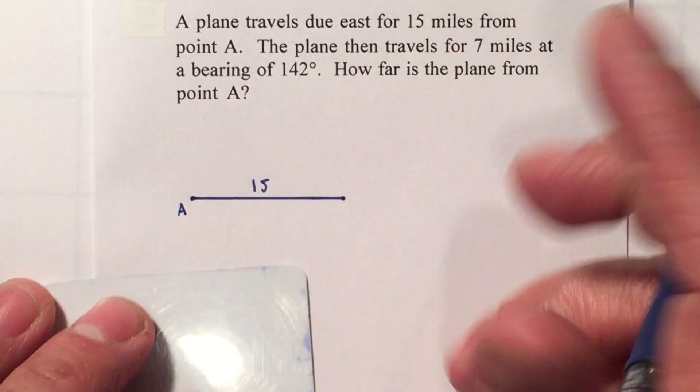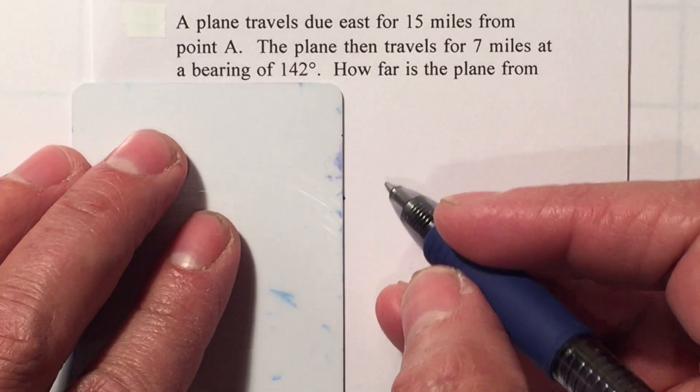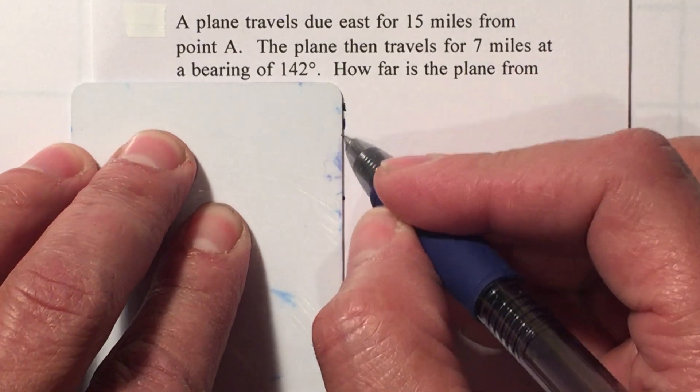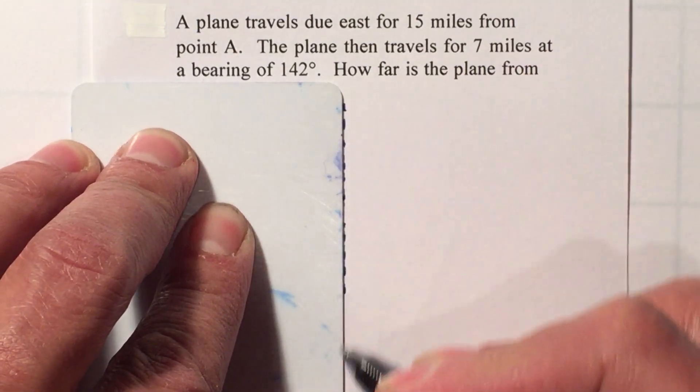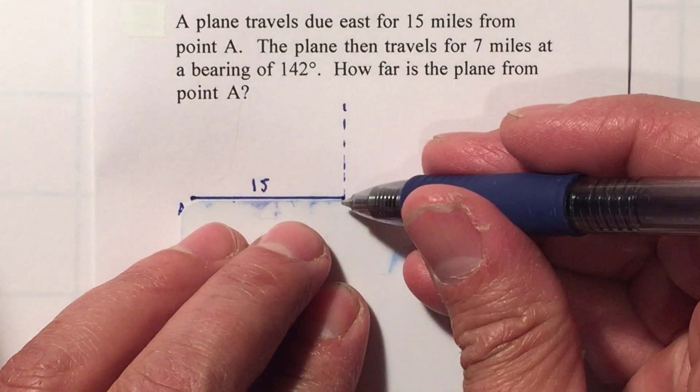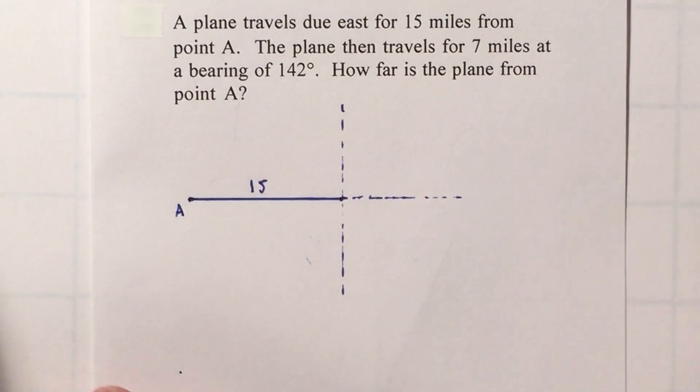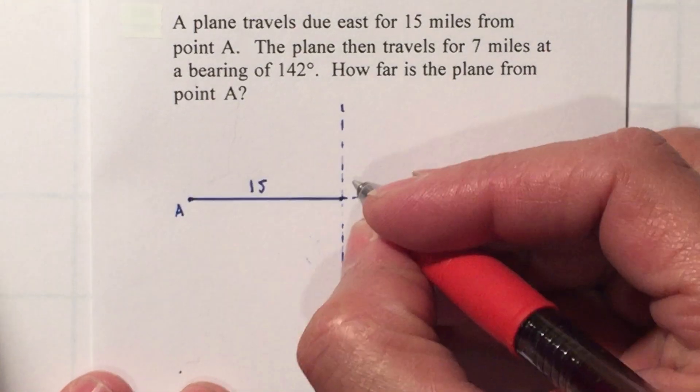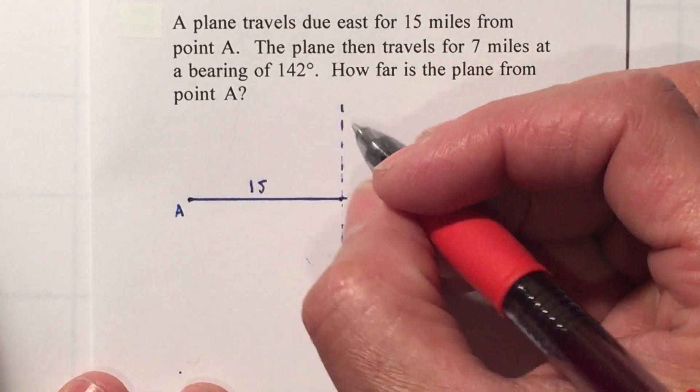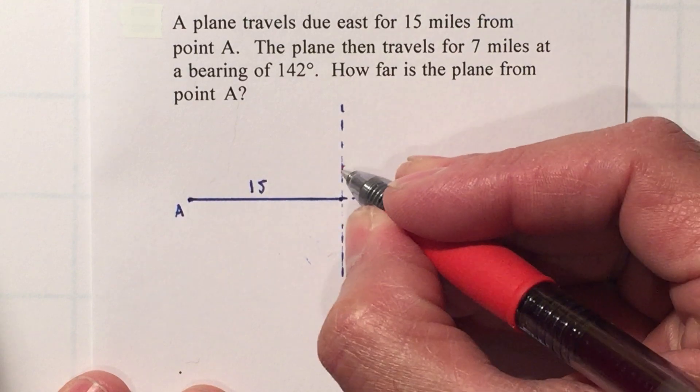Since it travels at a bearing of 142°, you want to place your x and y axis. So I'm going to create a dashed y axis and my x axis going to continue being dashed because you want to be able to rotate from the north.